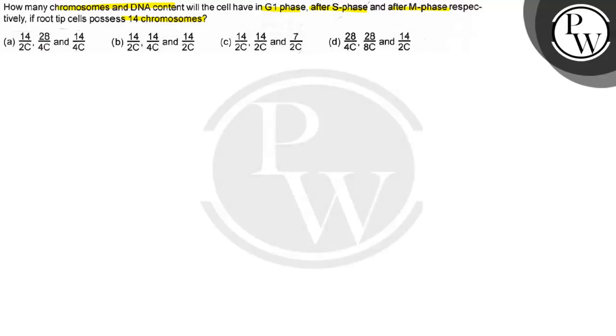Options are these. Option A: 14 chromosomes and 2 chromatids, 28 chromosomes and 4 chromatids, and 14 chromosomes and 4 chromatids.